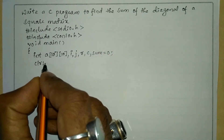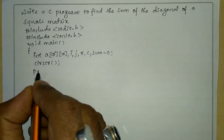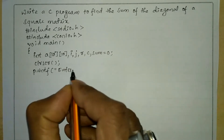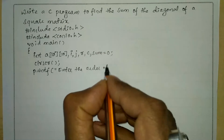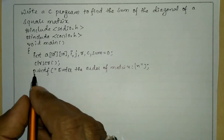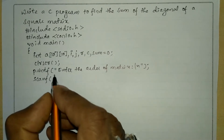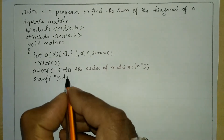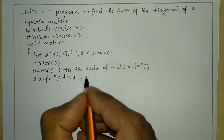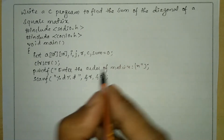Let us write the clrscr function which is used to clear the screen. Now we'll ask the user to enter the order of matrix using a printf function: 'Enter the order of matrix' followed by backslash n and semicolon. We're going to receive input from the user using scanf with format specifiers %d and %d, and ampersand of row and ampersand of column.